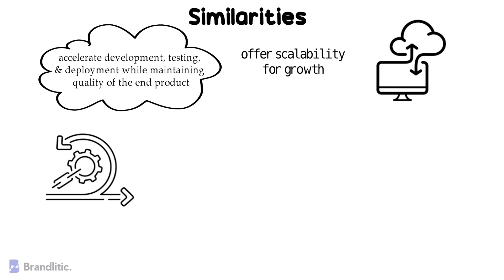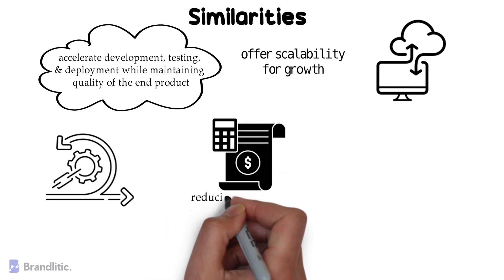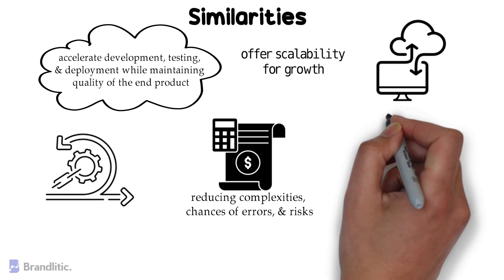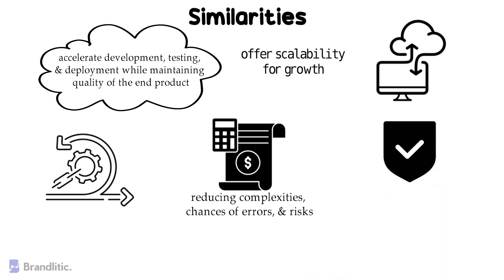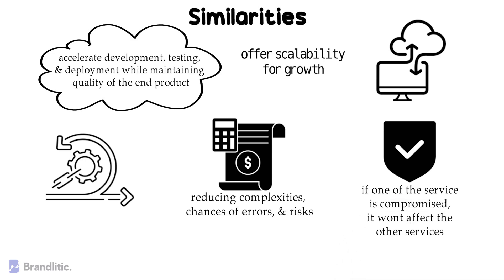Number five: both can help reduce expenses in software development by reducing complexities, the chances of errors, and risks. Number six: due to their distributed nature, microservices and APIs both provide security — even if one of the services is compromised, it won't affect the other services in the system, thereby promoting the safety of data and other organizational assets.